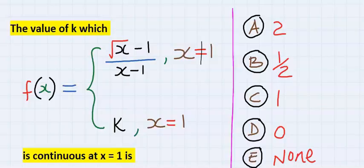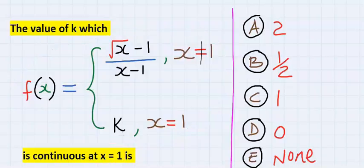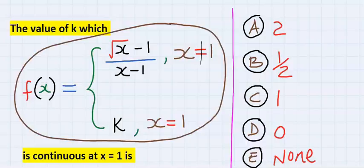Let's consider this question: the value of k which makes this function continuous at x equal to 1. When we complete solving for k, we are going to choose from one of these options. To solve this, let's understand the meaning of this function.